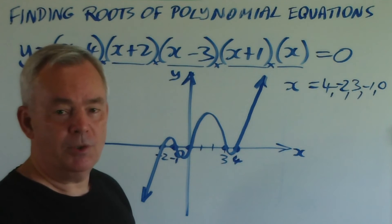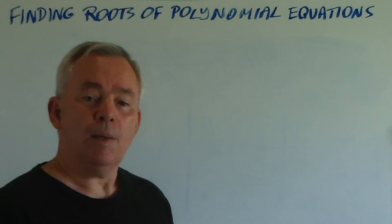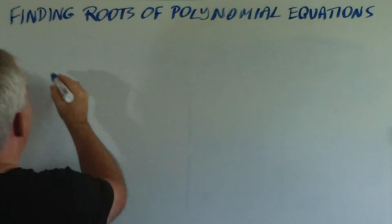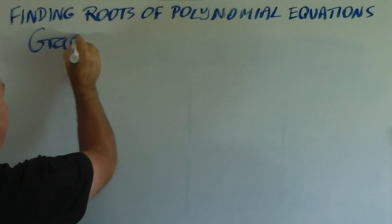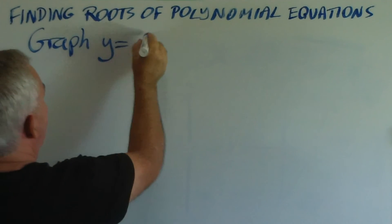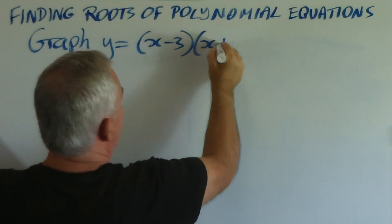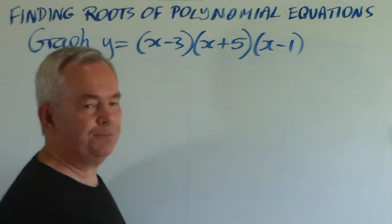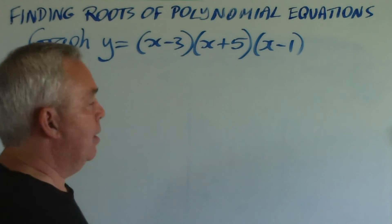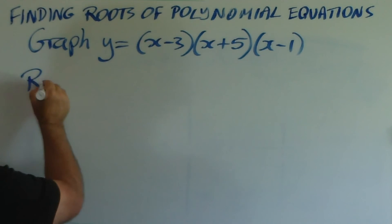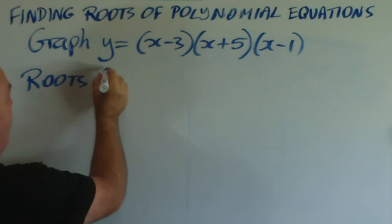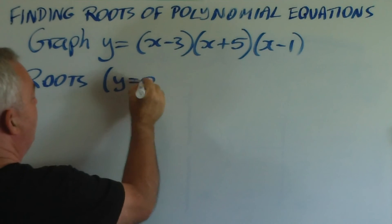Now, let me do it one more time and show you how I would set it out in an examination paper. Let's imagine we've been asked to graph y equals (x-3)(x+5)(x-1). I would write a heading, I would write the heading Roots to explain that's exactly what I'm finding, and I would explain how I'm going to find it. That is, I'm going to set y equal to zero.